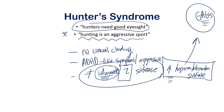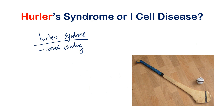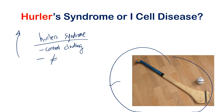Hunter syndrome also features short stature. Moving to Hurler syndrome — it's similar to Hunter's but has corneal clouding and does not have ADHD or aggression symptoms. The deficient enzyme in Hurler syndrome is alpha-L-iduronidase. A helpful mnemonic: there's an Irish sport called hurling that uses a hurler stick, which goes wide then narrow — like the Greek letter alpha.